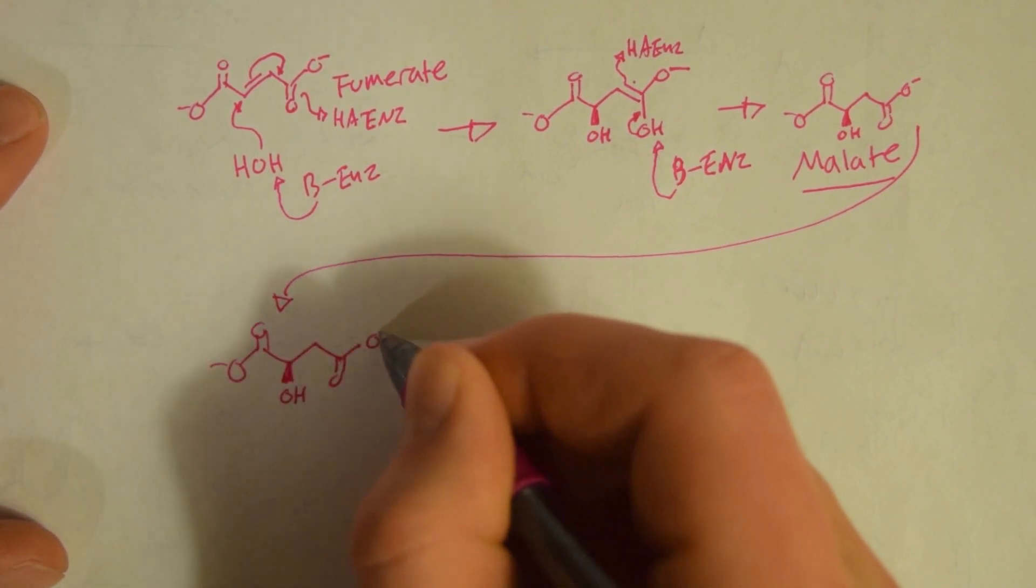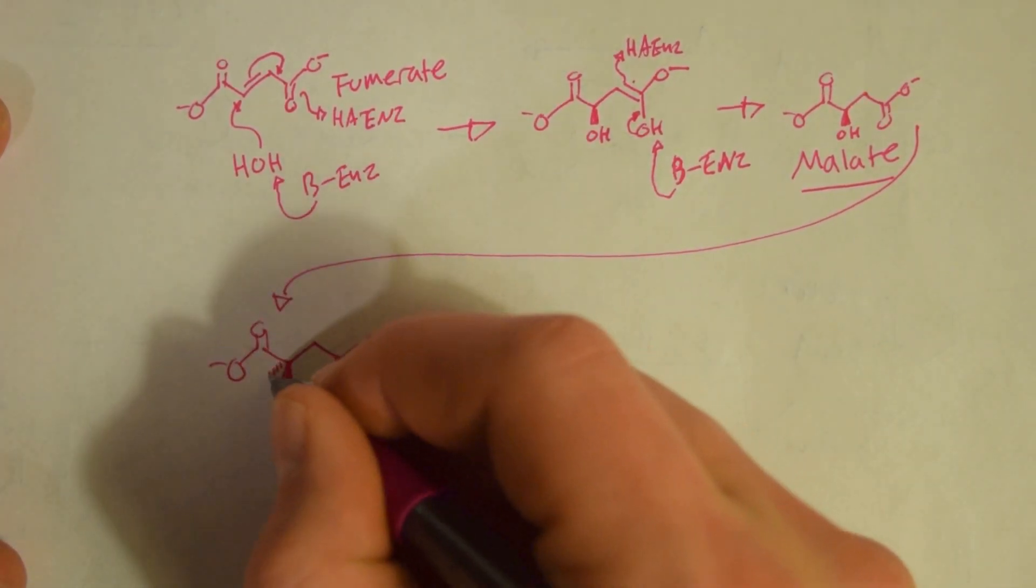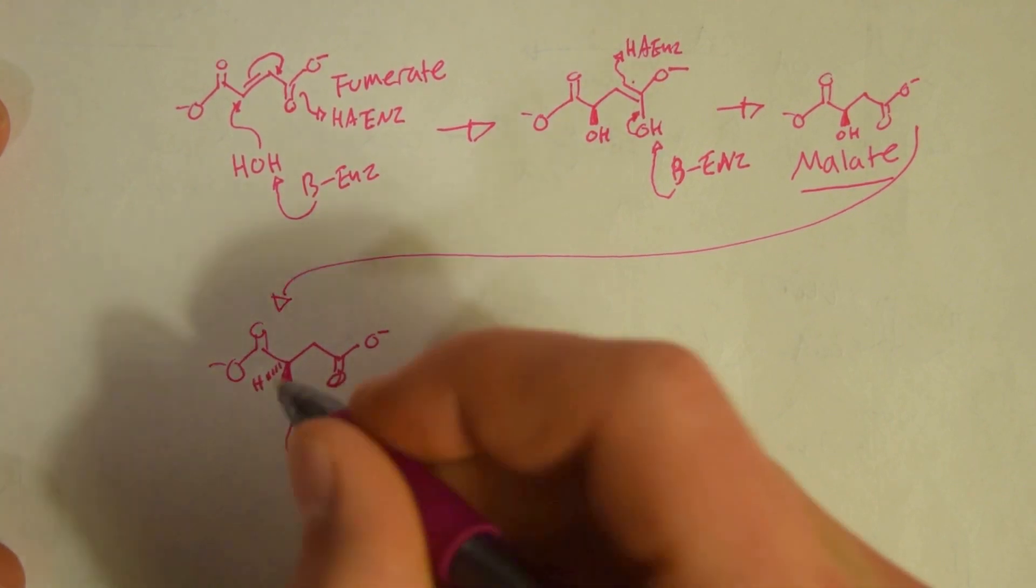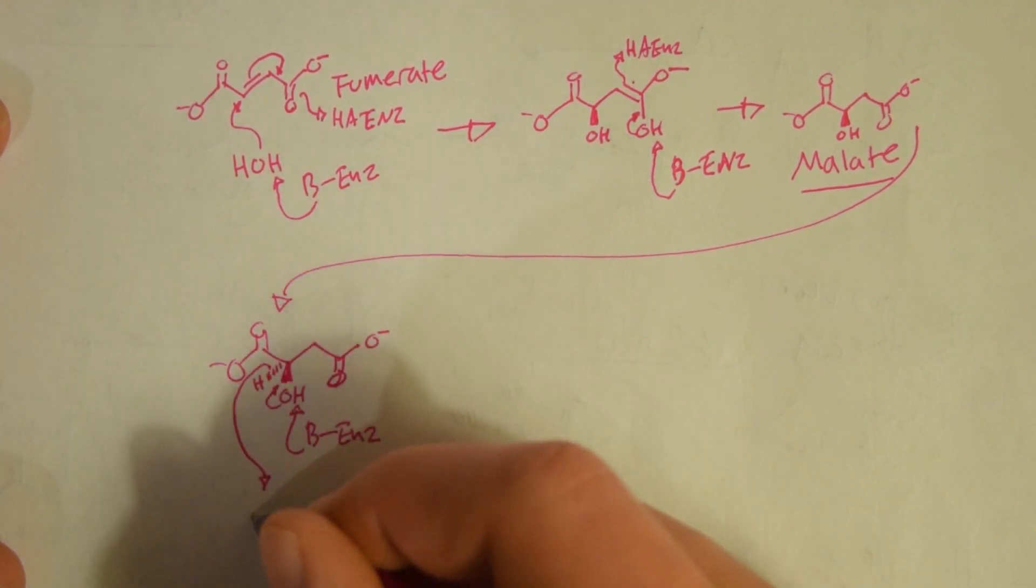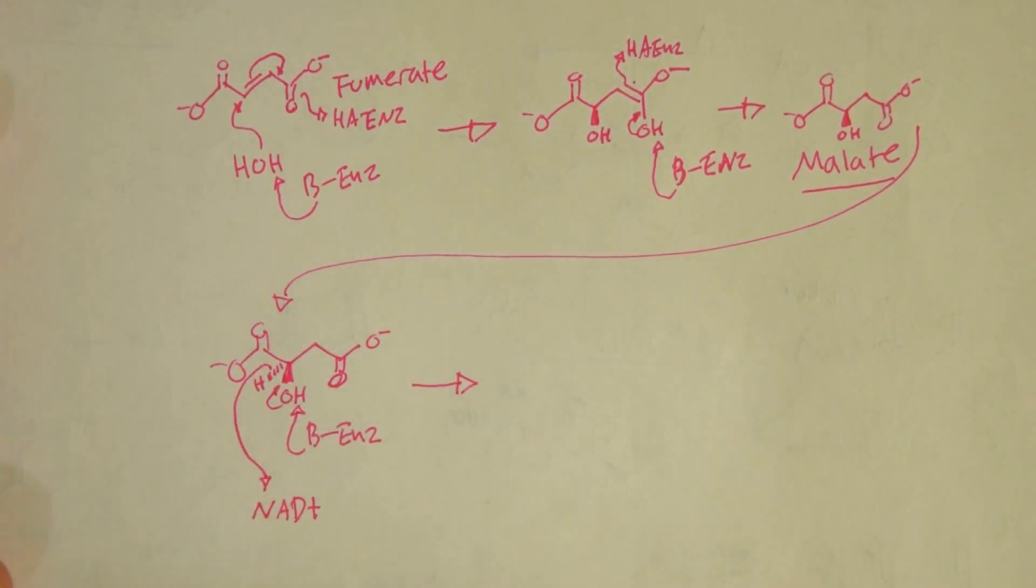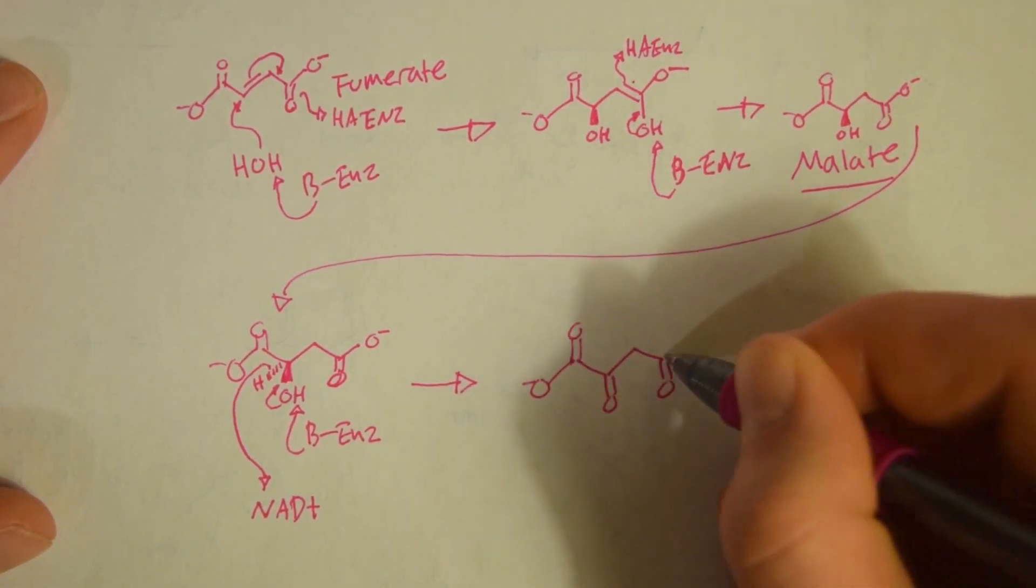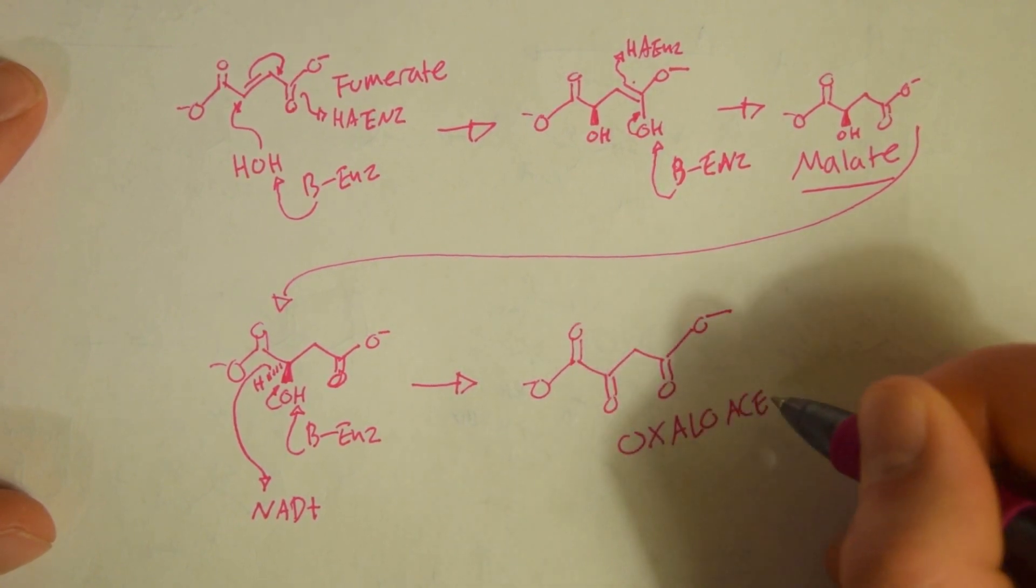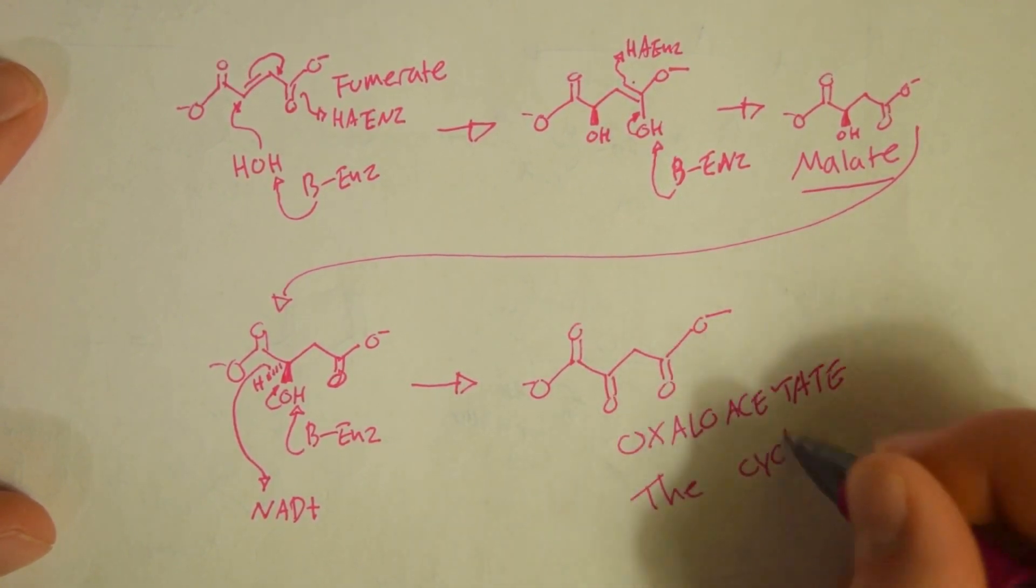Malate is going to be attacked by another enzyme, which is going to attack the alcohol group, kick off a proton, which is going to go to NAD+. And this is going to leave us with oxaloacetate, just like at the beginning, and NADH. And that's the entire cycle.